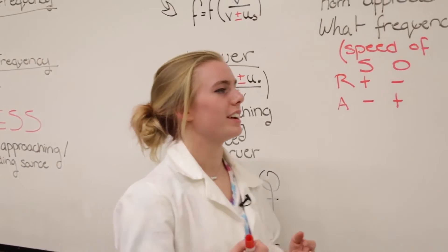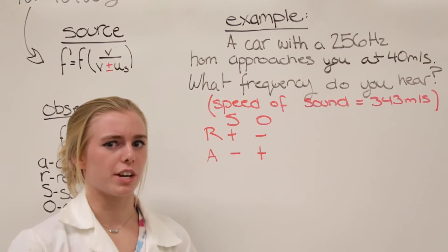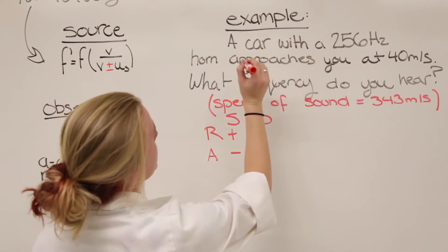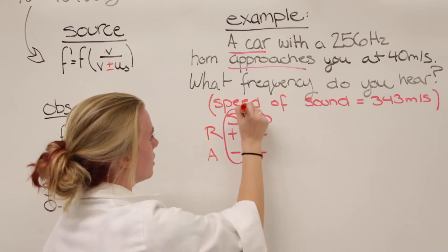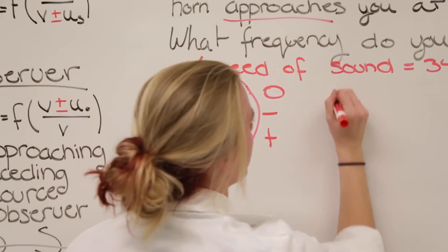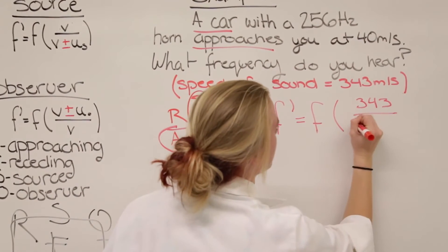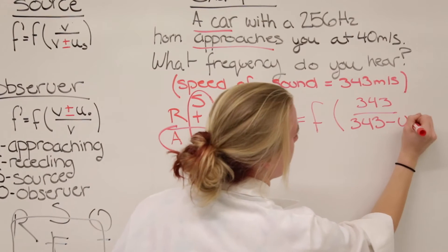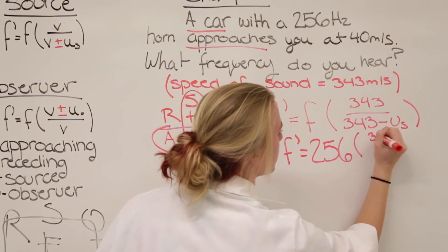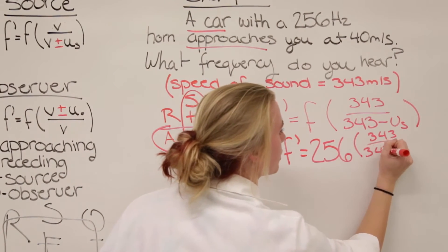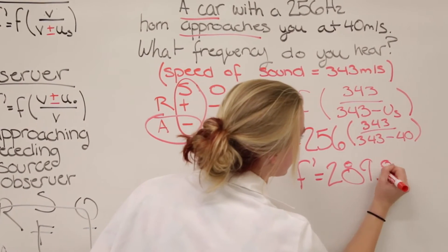Let me show you how ARSO works in action. A car with a 256 hertz horn approaches you at 40 meters per second. What frequency do you hear? Because we know that this is a source, which is the car, and it is approaching you, we know that if this is source and this is approaching, it is going to be negative. Plugging this in to our source equation, which is F prime equals F times the speed of sound divided by the speed of sound minus the velocity of the source, we will get that 256 times 343 divided by 343 minus 40 equals 289.8 hertz.